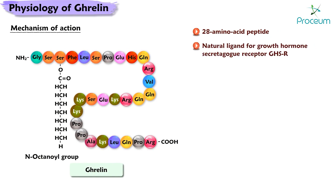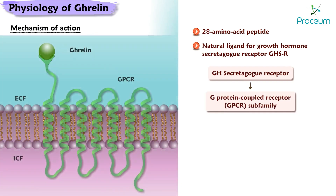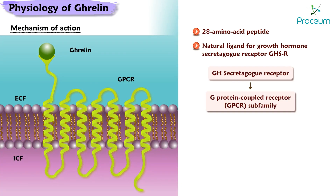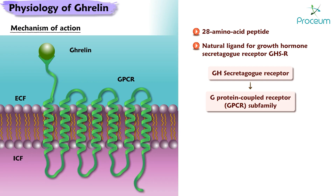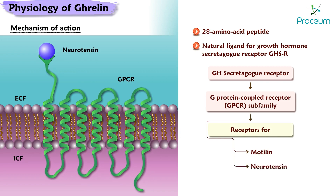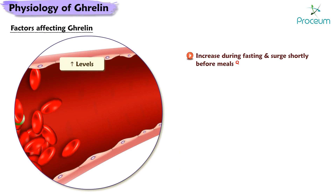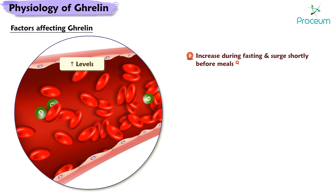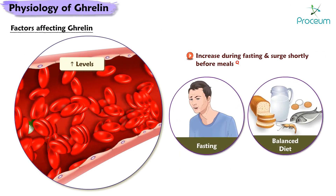The GHS receptor is a member of the G protein-coupled receptor subfamily that also includes receptors for motilin, neurotensin, and neuromedin type U. Ghrelin concentrations in the blood increase during fasting and surge shortly before meals.